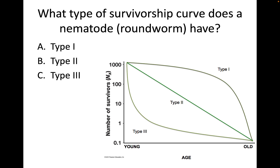If we think about a roundworm, for example — a parasitic worm that parasitizes humans — it will lay many thousands of eggs in a given time, and the likelihood of any of those eggs ever reaching adulthood as a parasite is very, very small. That's similar to what we learned with the rainbow trout, which had a Type 3 survivorship curve. So a nematode would have a Type 3 survivorship curve, with almost all of the eggs not surviving past the egg stage and very few ever reaching adulthood.